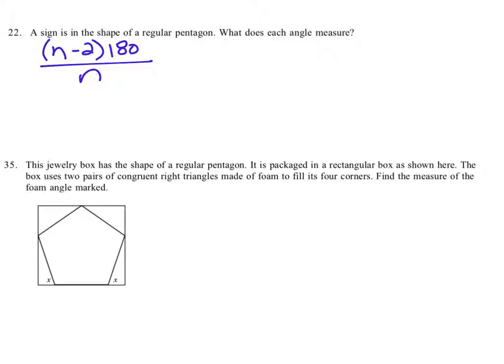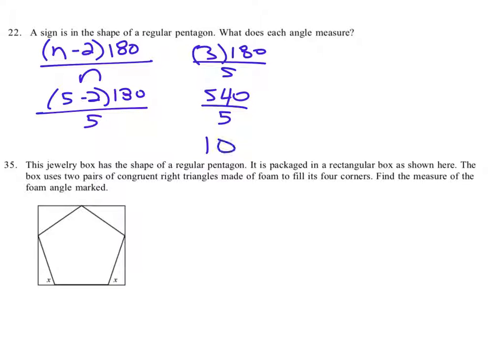So if it's 5, then we're looking for 5 minus 2 times 180 divided by 5. That's 3 times 180 divided by 5, or 540 divided by 5, which is 108 degrees.